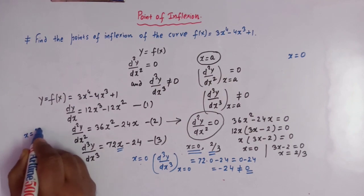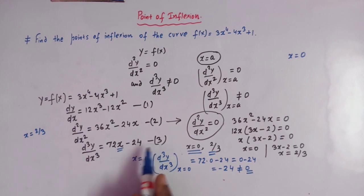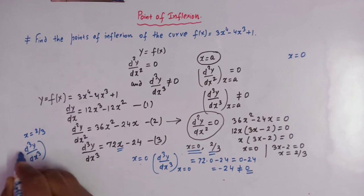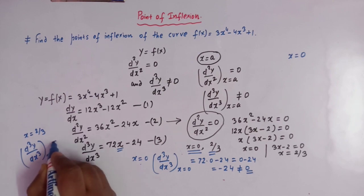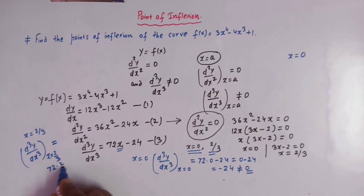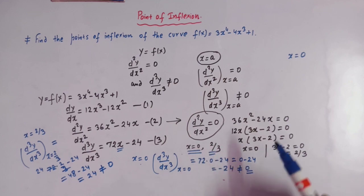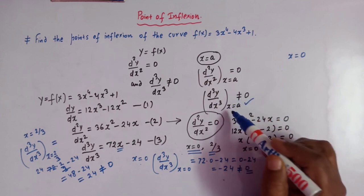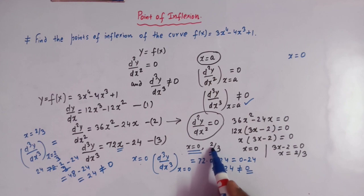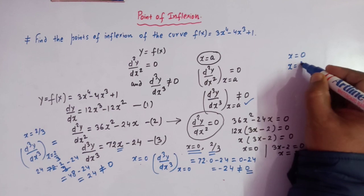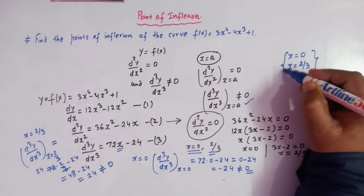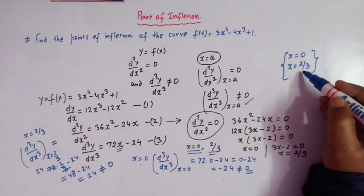Now let us test the second point x = 2/3. The third derivative at x = 2/3 is 72(2/3) - 24 = 48 - 24 = 24, which is also not equal to zero. So x = 2/3 also fulfills the condition that the third derivative is not equal to zero at that point. Therefore x = 2/3 is also a point of inflection.